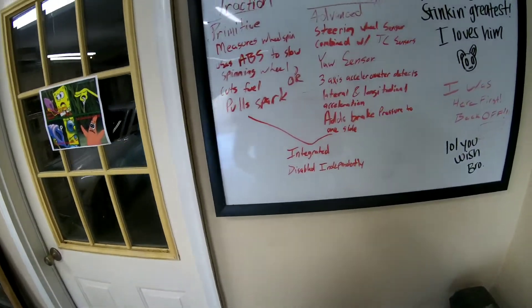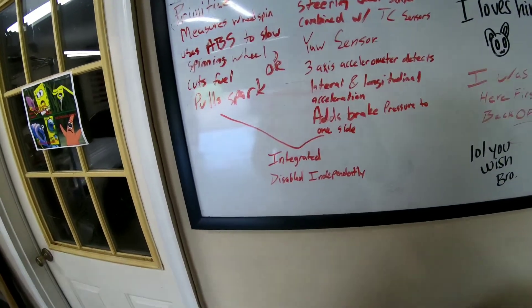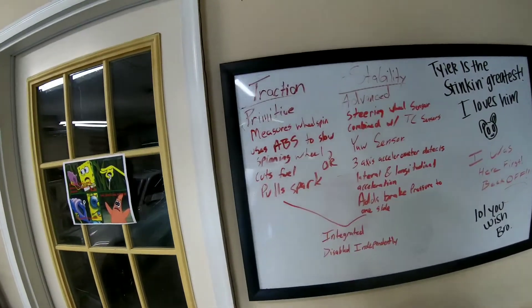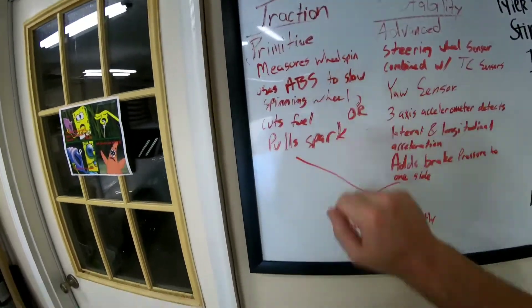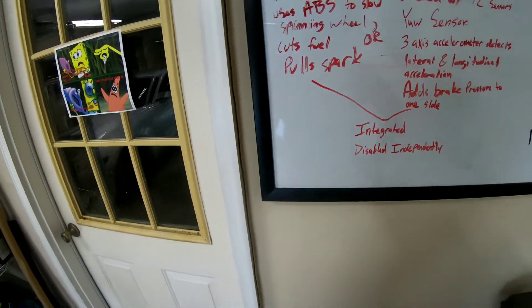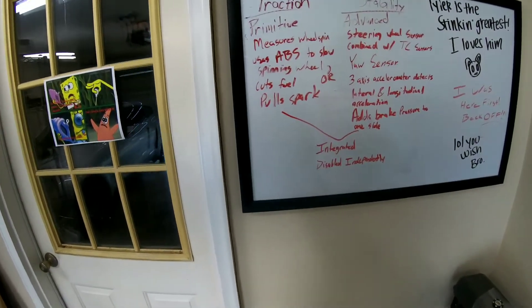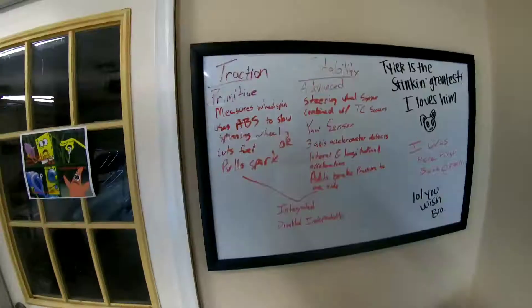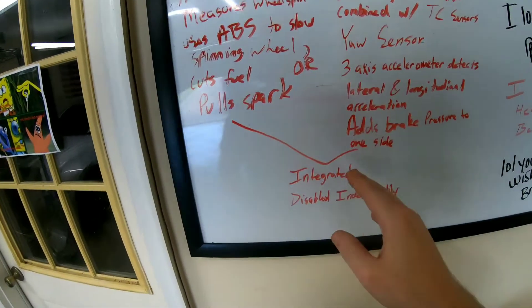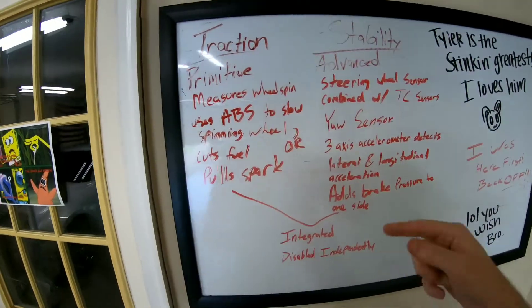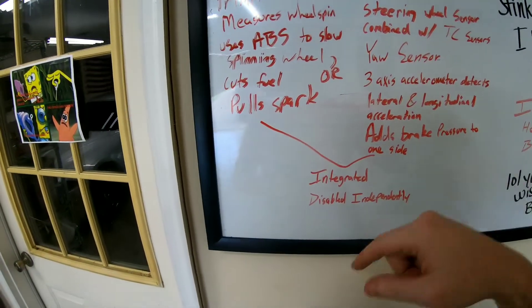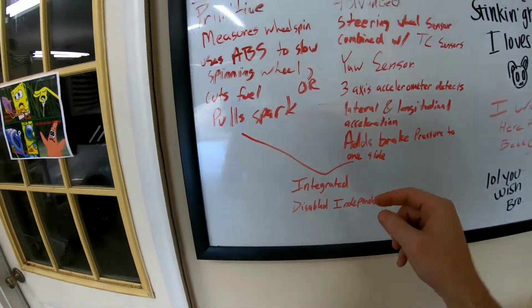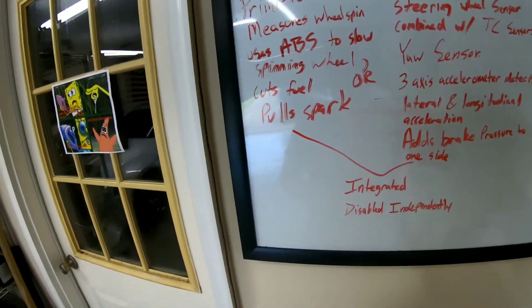So traction control is a feature that all modern cars have, but it is pretty primitive. Pretty much how it works is by measuring wheel spin. If it detects that one wheel is spinning much faster than the others, then it's going to apply brake pressure to that one wheel to slow everything down.